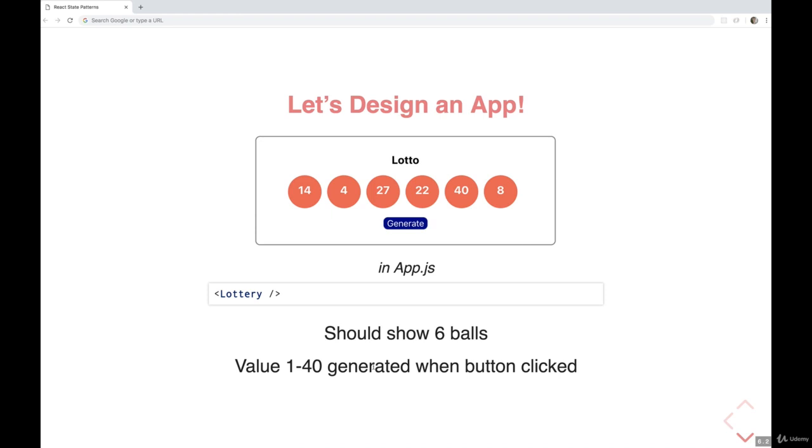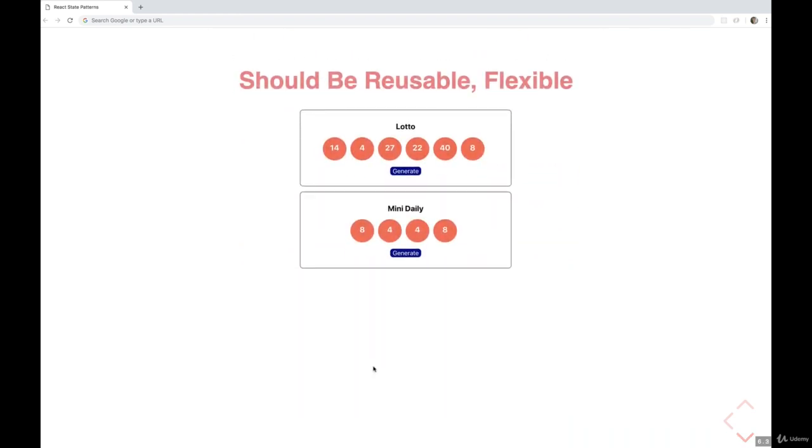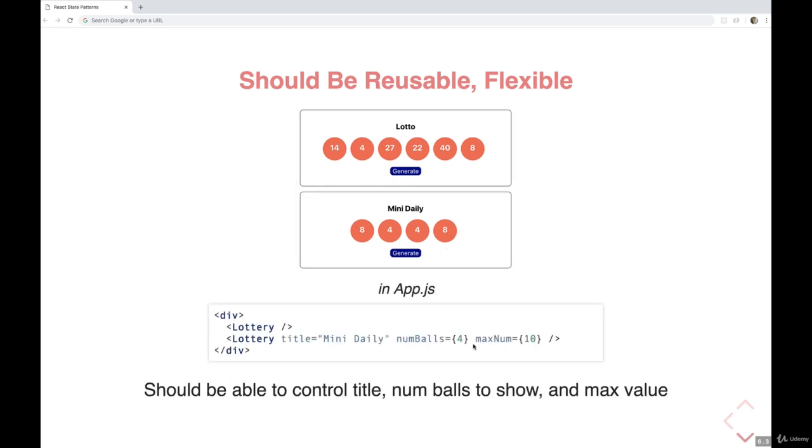But I also want it to be extendable. I want to be able to reuse it in different situations. So I could have a mini daily lotto instead of this one that has six balls. I want a mini one that has four, and the numbers only go from 1 to 10 rather than 1 to 40. So keep that in mind if we want to be able to reuse and make this a flexible component.